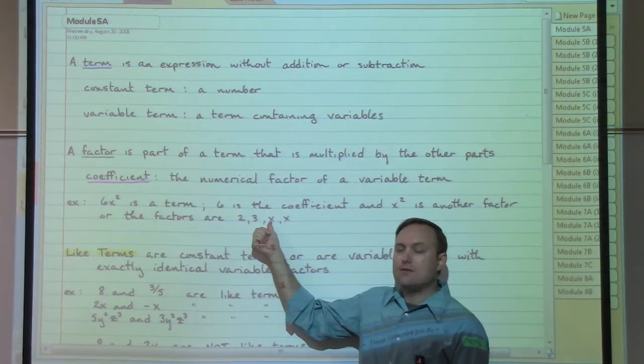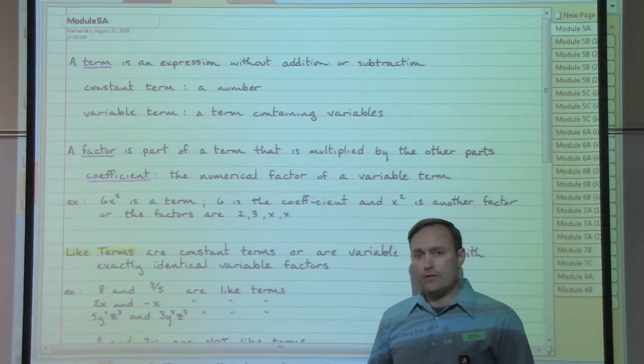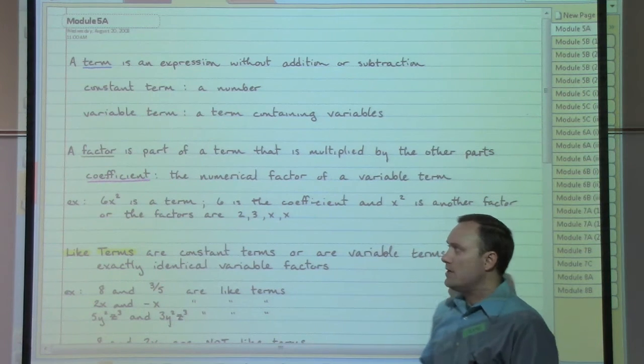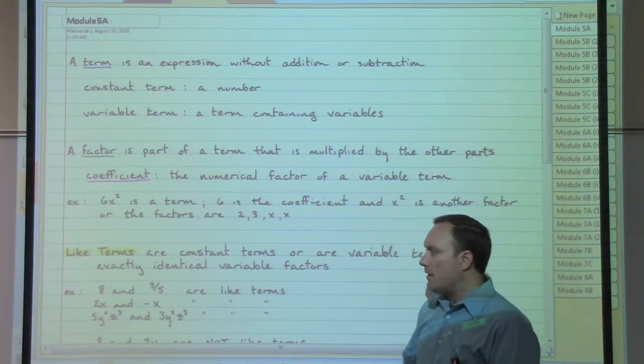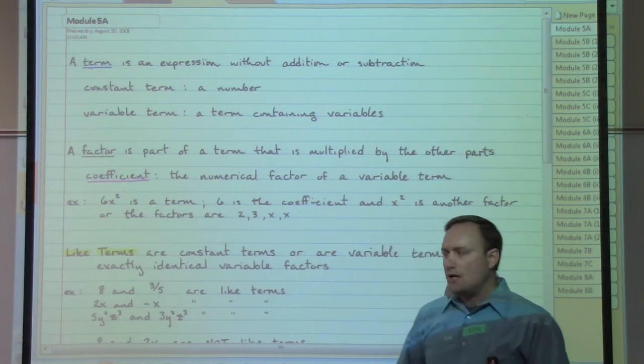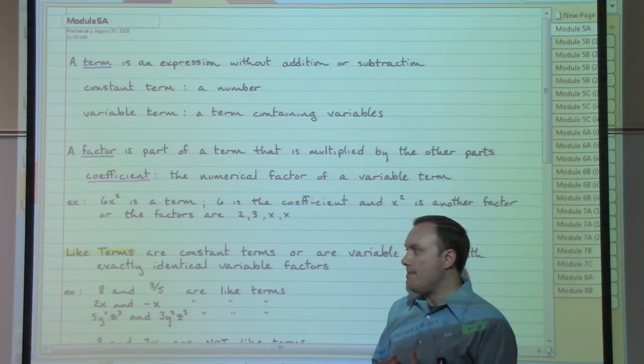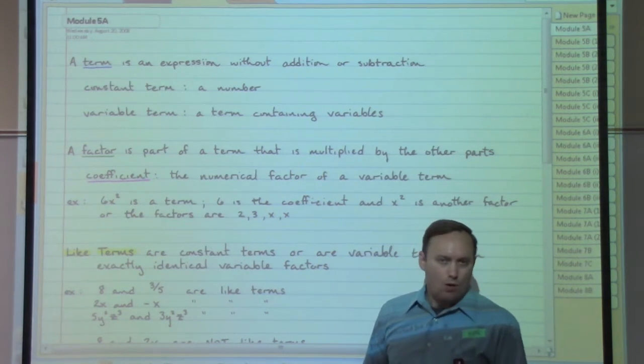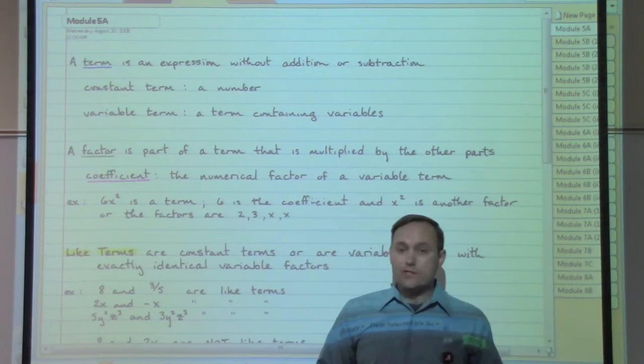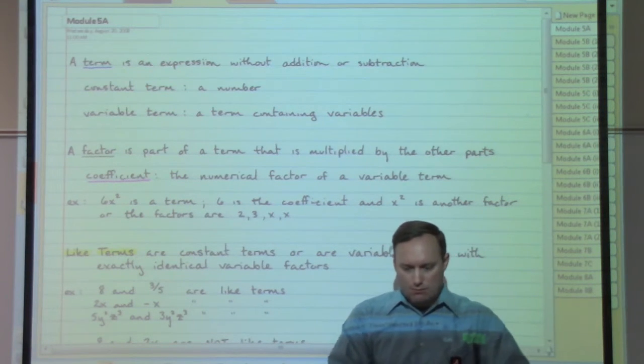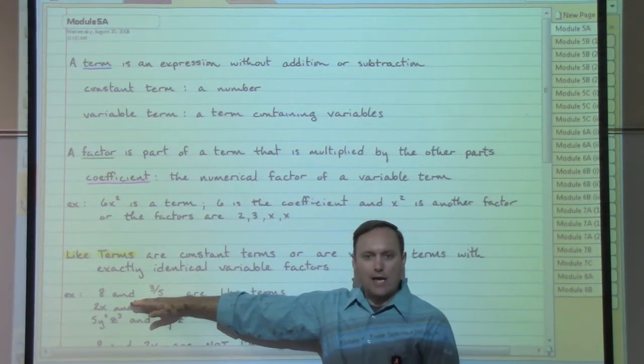Each of those separated pieces would be a factor: factor of 2, factor of 3, factor of x, another factor of x. These are the two basic ideas. Mostly for now, we're going to deal with terms and eventually come back to factors. We're going to start with the idea of terms that are different from one another or alike. Terms that are alike can be put together—think of it like apples with apples, oranges with oranges.